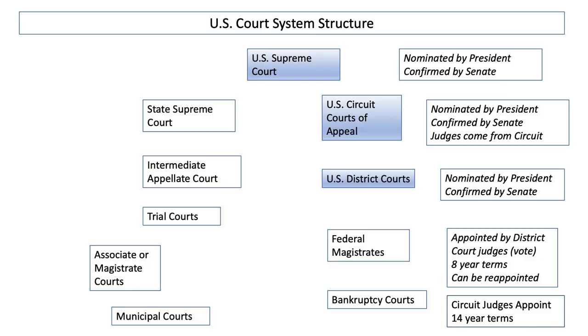Bankruptcy judges are appointed by the circuit court judges in that circuit. For example, in Missouri, the bankruptcy court judges in the St. Louis Bankruptcy Court are appointed by the Eighth Circuit judges. And in Illinois, in Chicago, the bankruptcy judge would be appointed by the Seventh Circuit judges.